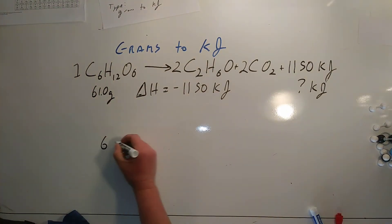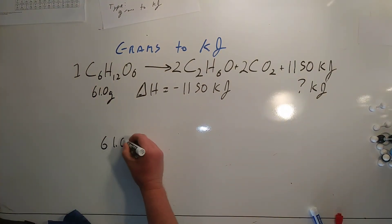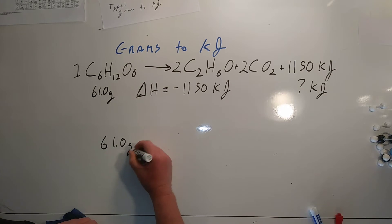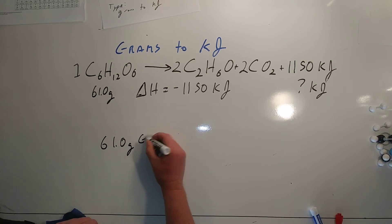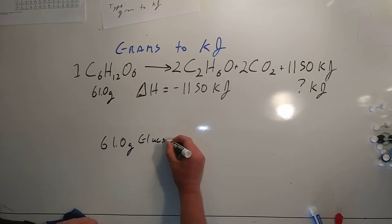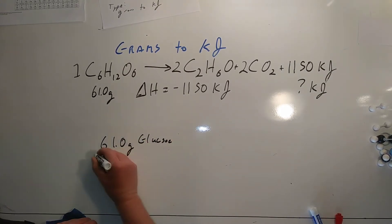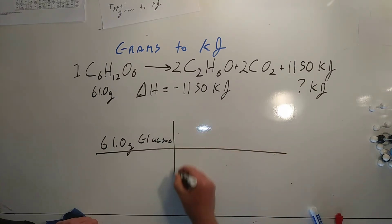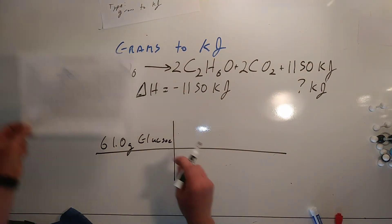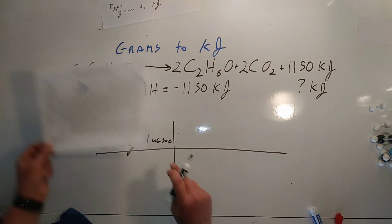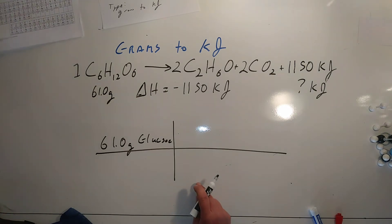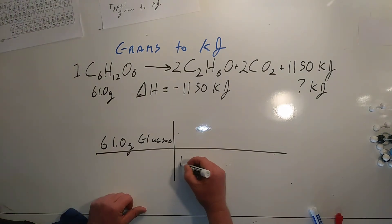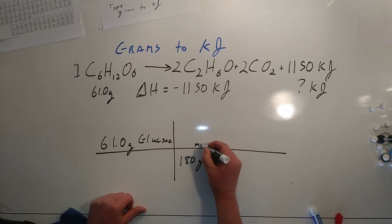Our shopping list is very short, and we start with 61 grams of glucose. Our first step is identical — looking at the periodic table. Glucose is 180 grams per mole.